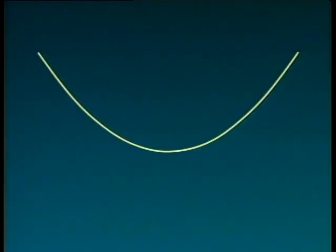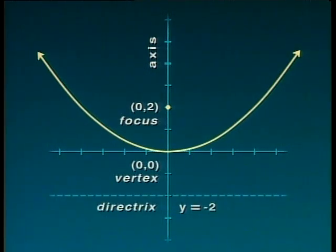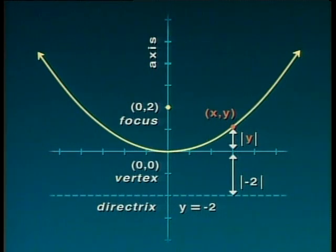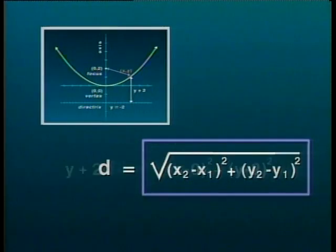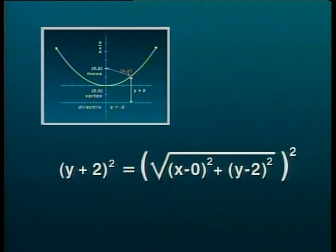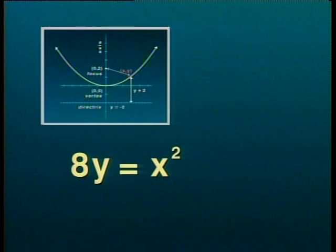Now we have all the information necessary to algebraically describe a parabola. Let's take this parabola with vertex at the origin and focus at zero, positive two. Since the vertex is halfway between the focus and the directrix, the directrix is y equals negative two. The distance between any point x, y on the curve and the directrix equals y plus two. By definition, this equals the distance from that point to the focus. Using the distance formula and simplifying — squaring both sides and manipulating — we get 8y equals x squared, the equation for this parabola.